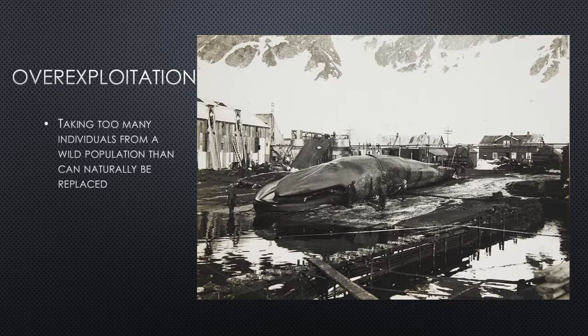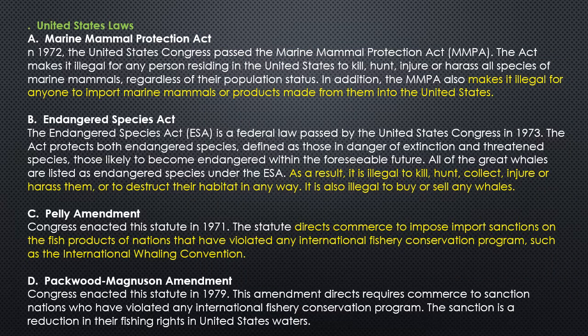By the early 1900s, as whaling became more efficient and commercial, whale populations began declining worldwide — many species were on the verge of extinction or did go extinct. Legislation helped protect whales: the Marine Mammals Protection Act and the Endangered Species Act affected whales in the US, but whales roam worldwide through different seas.